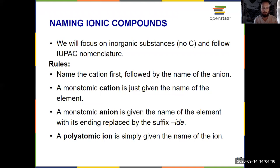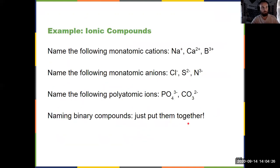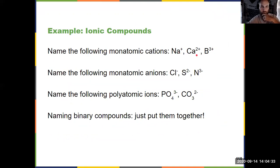Polyatomic ions are just named as the ion itself, so really it's just this middle rule that's tricky — anions get -ide. For monatomic cations, we just name it as the atom: sodium, calcium, boron.